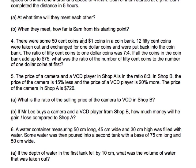The ratio of 50 cent coins to 1 dollar coins was 7 is to 4. If all the coins in the coin bank add up to 75 dollars, what was the ratio of the number of 50 cent coins to the number of 1 dollar coins at first?